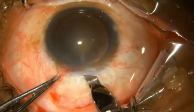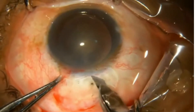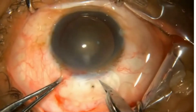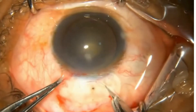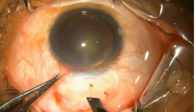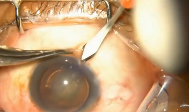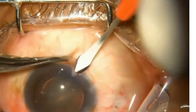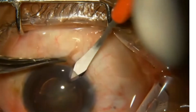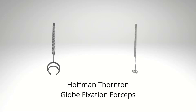These forceps have tips that often lead to conjunctival and sub-conjunctival bleeding during globe fixation. The consequent red eye is often a concern for the patient after cataract surgery.